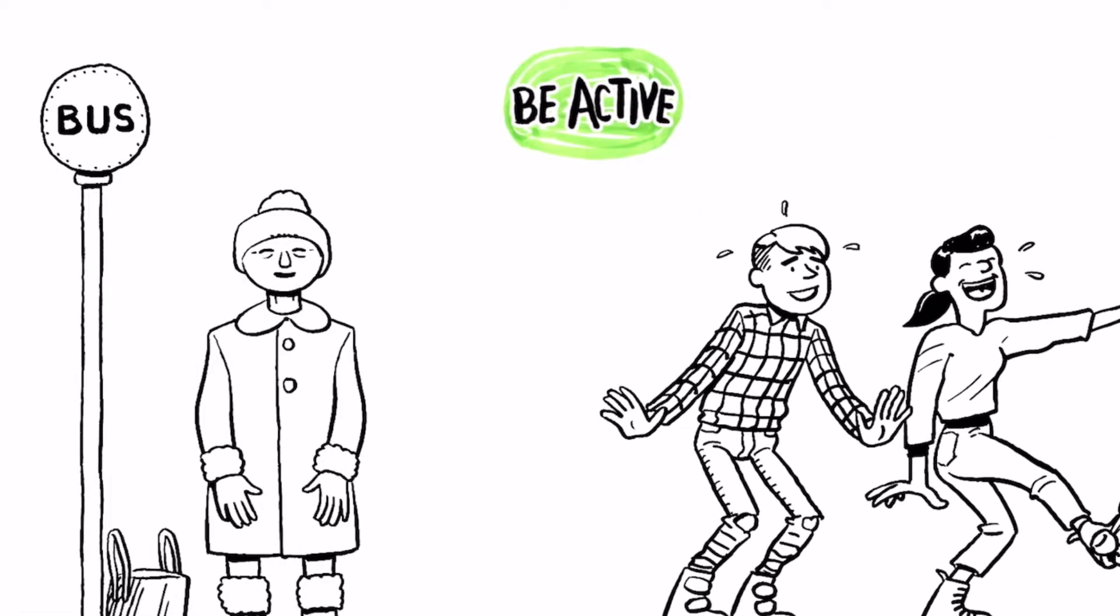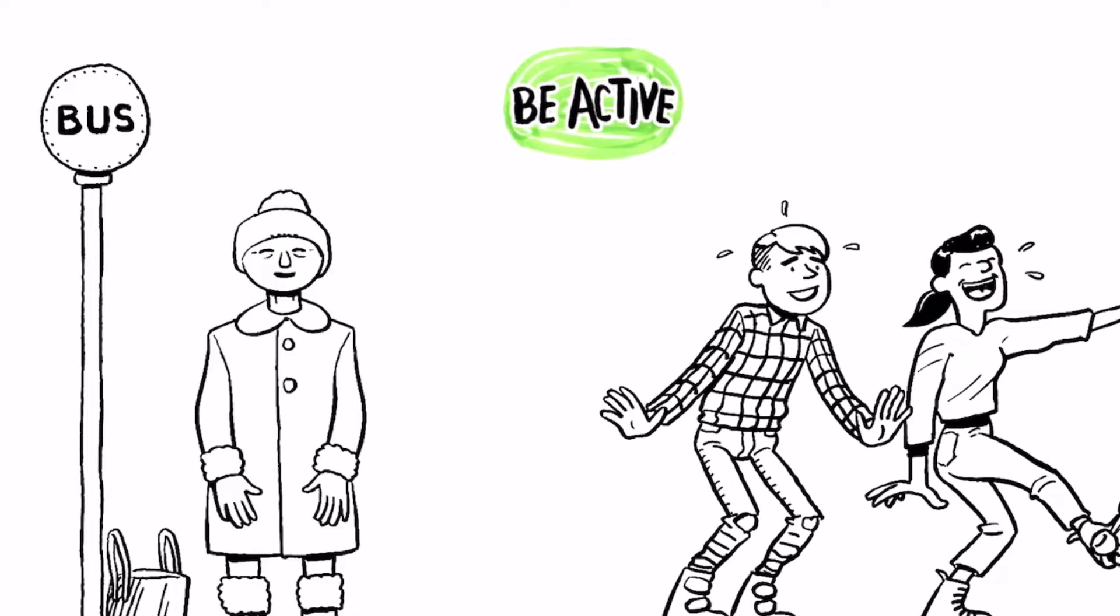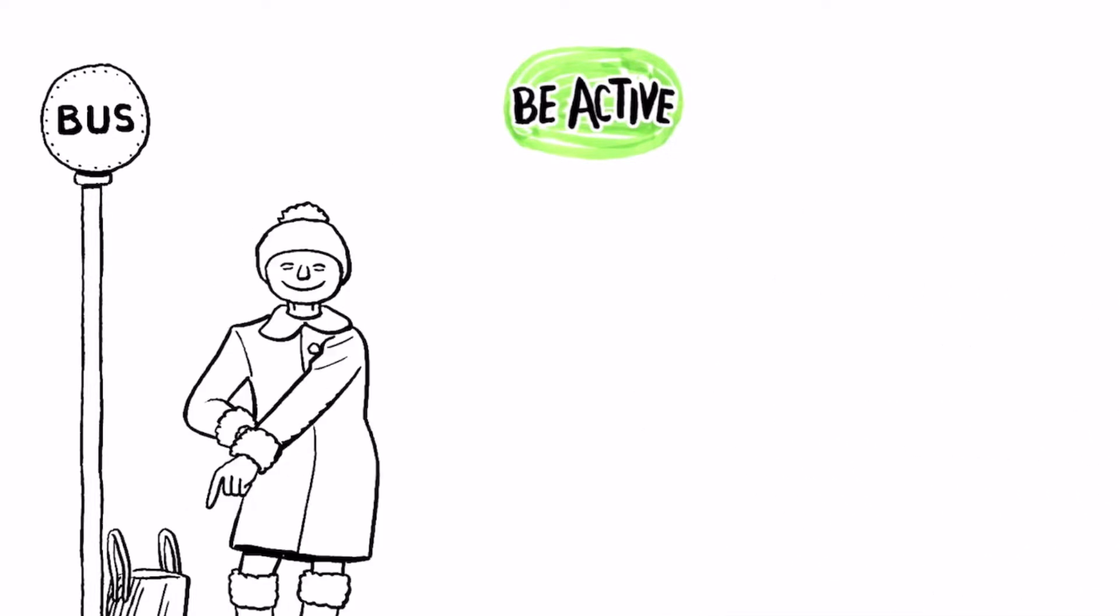Cycling, gardening, walking, and dancing are all ways we can get more active. Being active every day causes changes in our brain which can positively affect our mood.